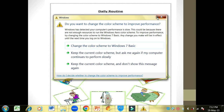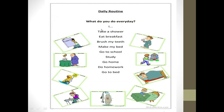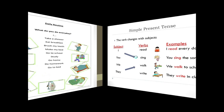If you are describing your own daily routine, you say I take a shower — you do not use 's' with the verb. But if someone else is describing a girl's routine, she takes a shower, she eats breakfast, she brushes her teeth, she makes her bed, she goes to school. Same as the case with 'he': he studies hard, he goes home, he does his homework, he goes to bed. When you talk about the singular subject he or she, you use 's' with the verb, but with a plural subject or 'I' and 'you', you do not use 's'.